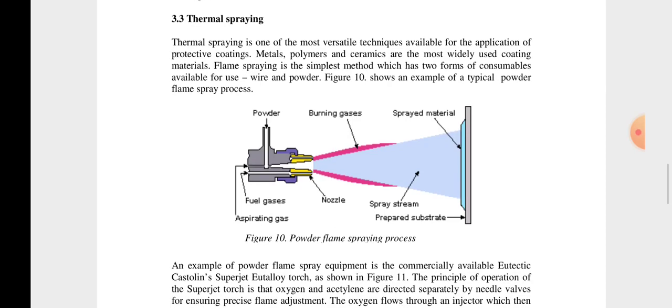Then thermal spraying. This is an example of surface engineering. This is one of the most versatile techniques available for the application of protective coatings. That is metals, polymers, and ceramics are the most widely used coating materials.